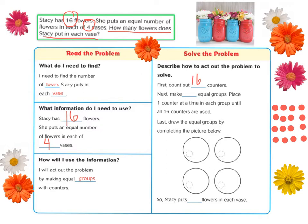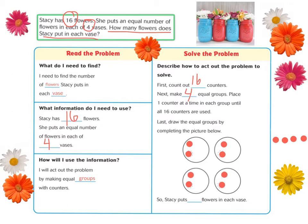Next, make four equal groups. Place one counter at a time in each group until all 16 counters are used: 1, 2, 3, 4, 5, 6, 7, 8, 9, 10, 11, 12, 13, 14, 15, 16.